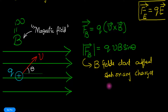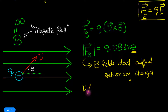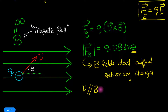The second thing is that the magnetic force not only depends on speed but also on the direction of motion. There's a sine theta in the expression, which tells us that if the velocity is parallel — or even anti-parallel — to the magnetic field, the force is zero, even if the charge is moving.